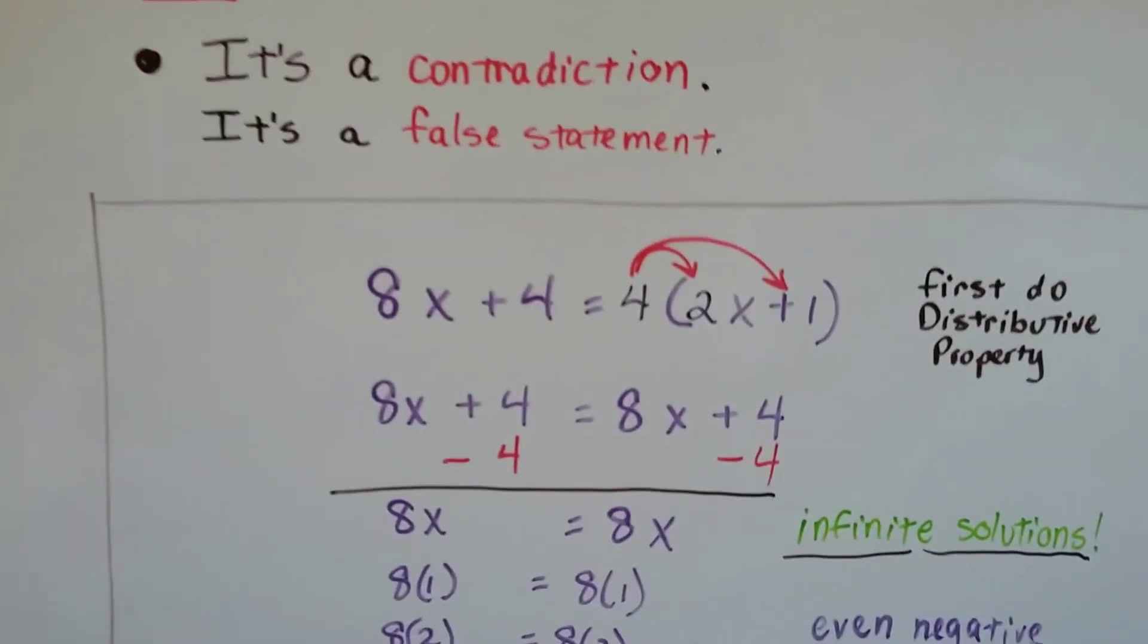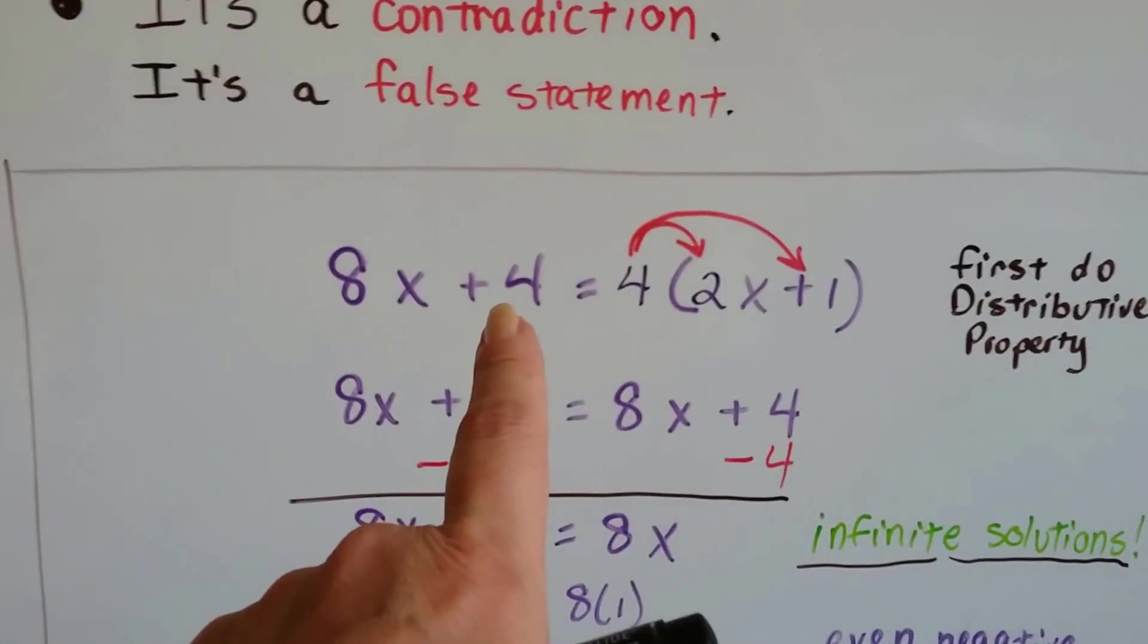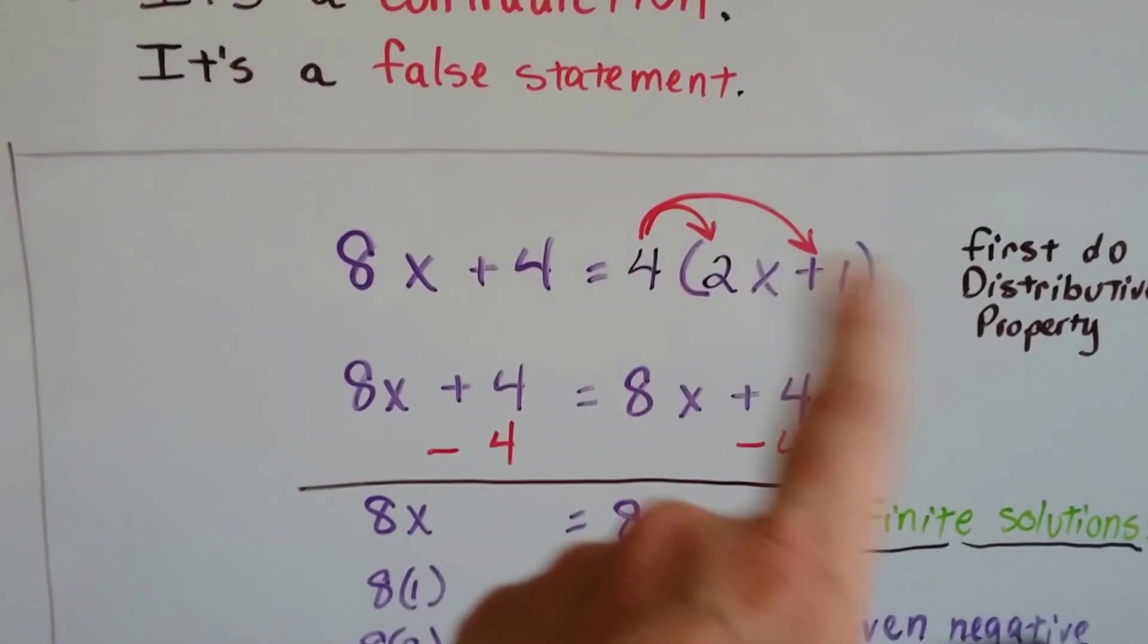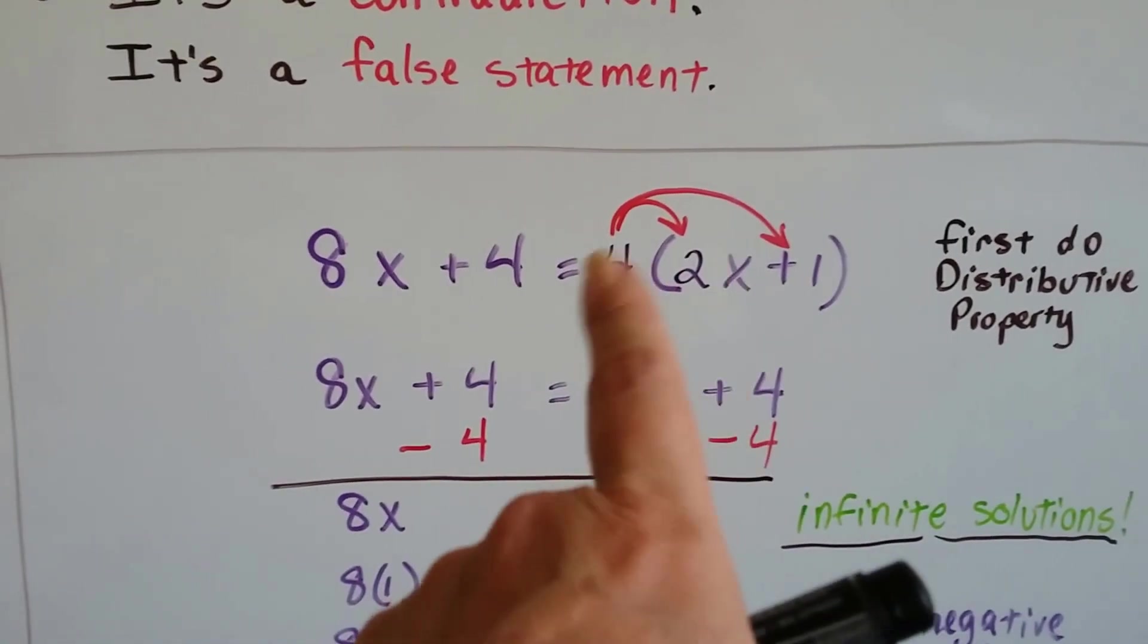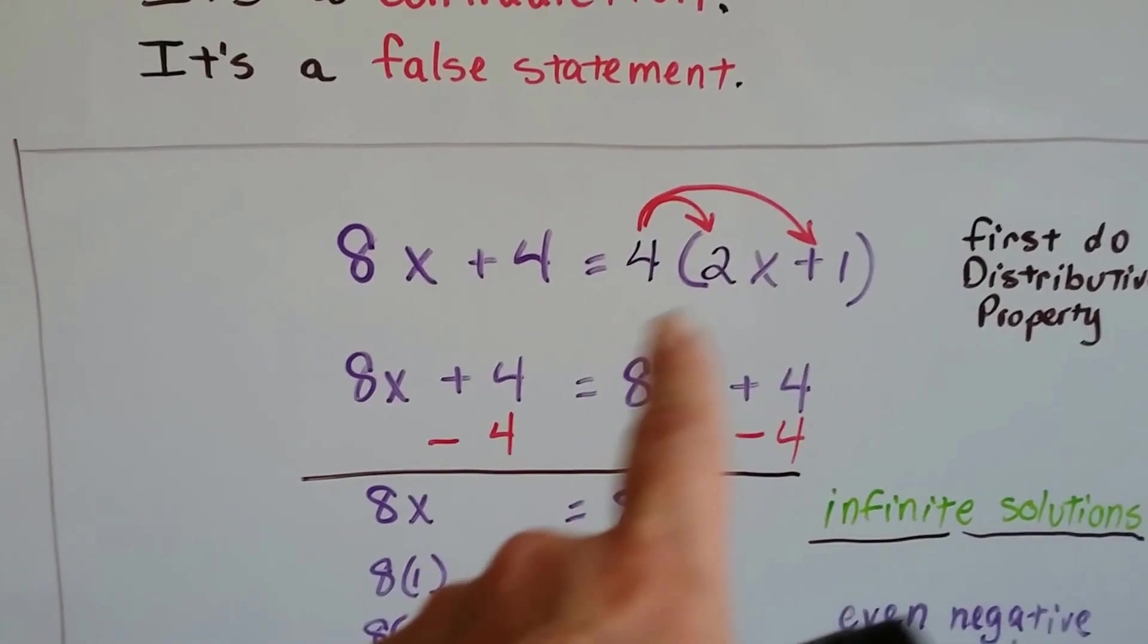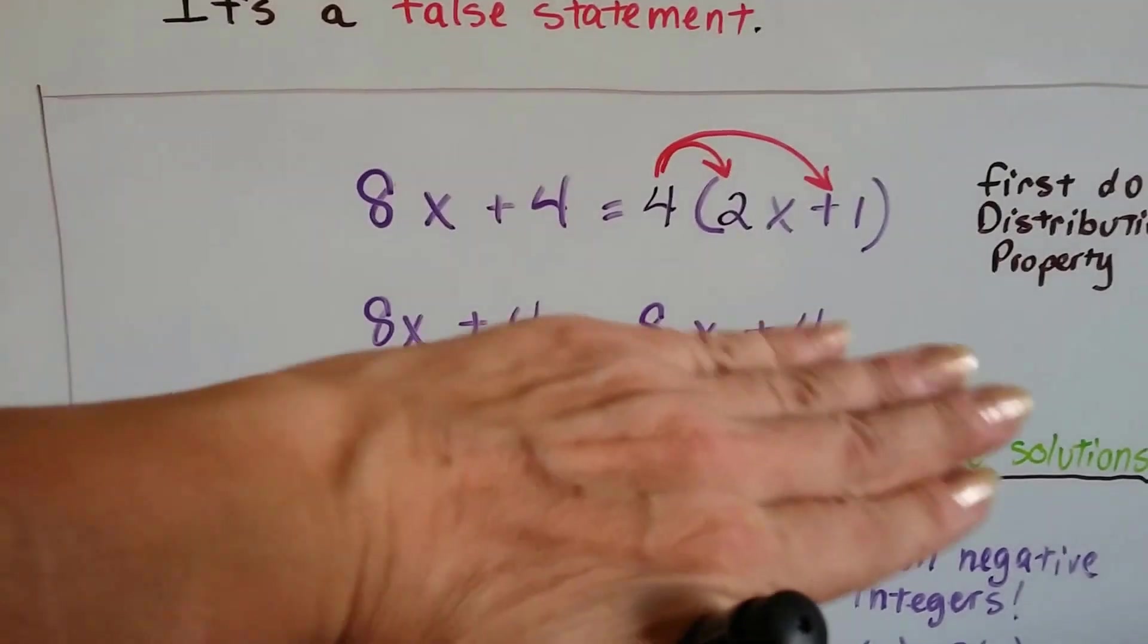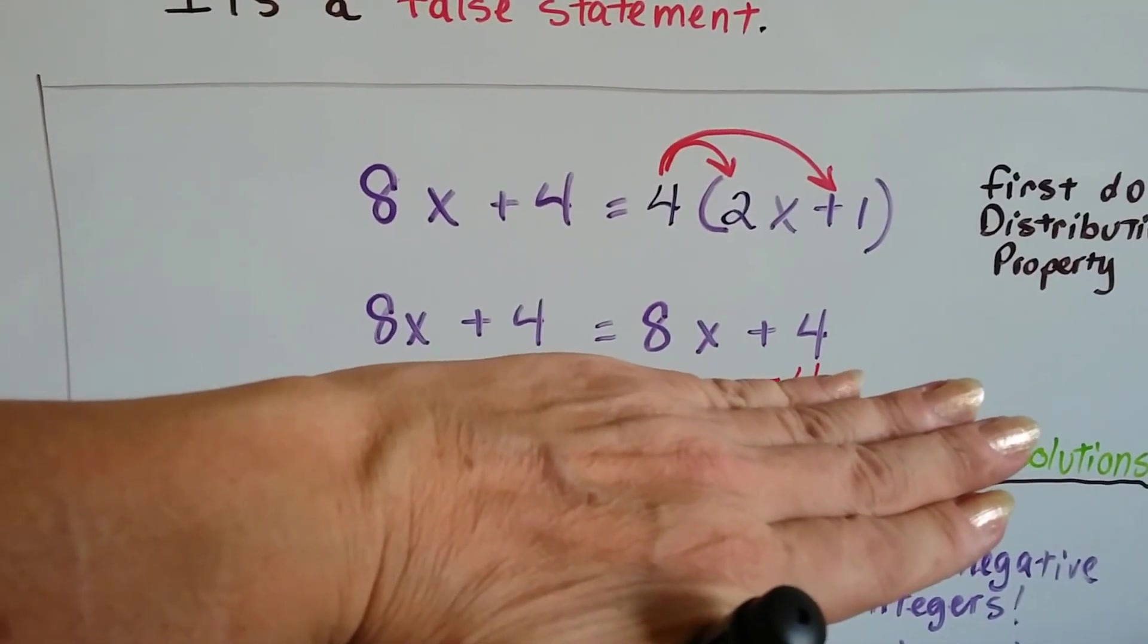Let's take a look at this one. We've got 8x plus 4 equals 4 and then 2x plus 1 in parentheses. Can you already see what I see? What's 4 times 2? Yeah, we've got the 8x right there. 4 times 1 is 4. It's got the same equation on both sides.